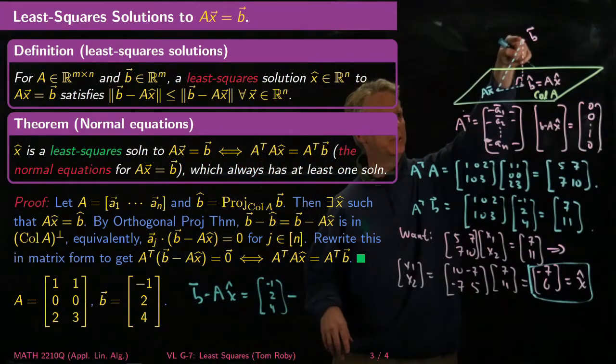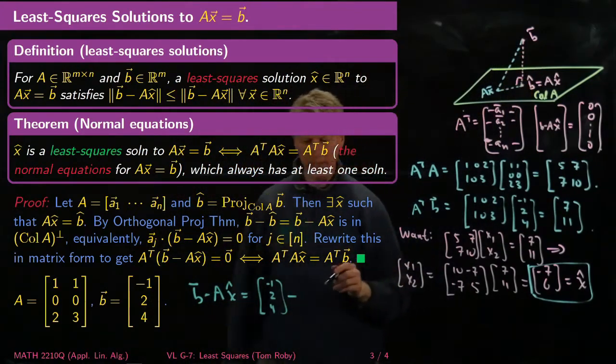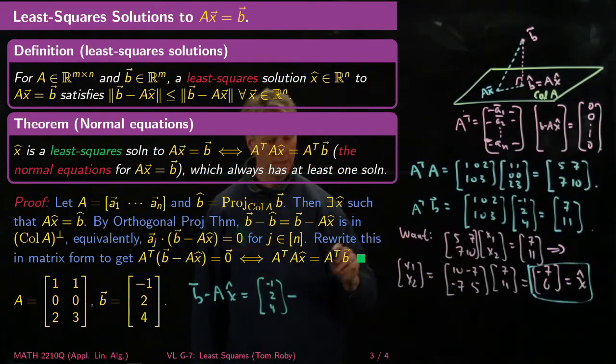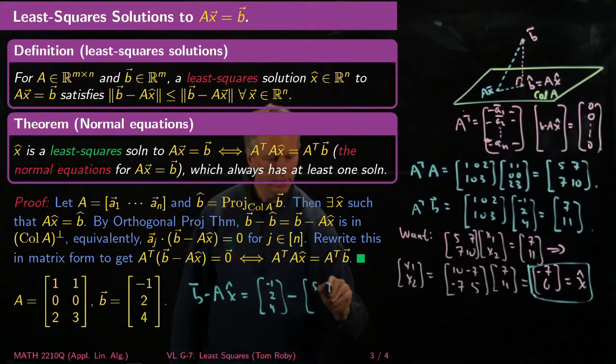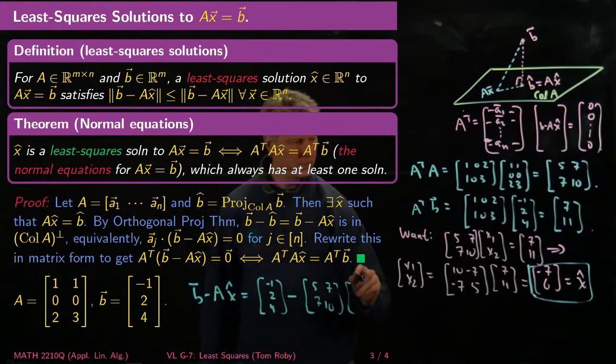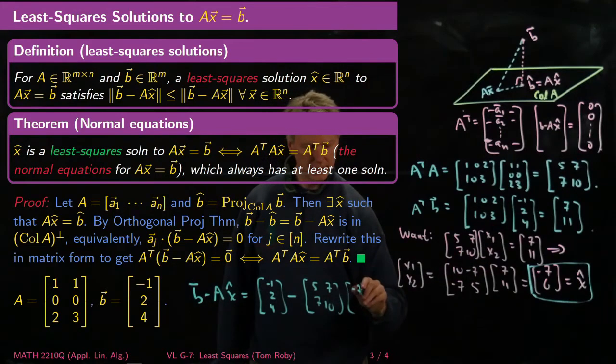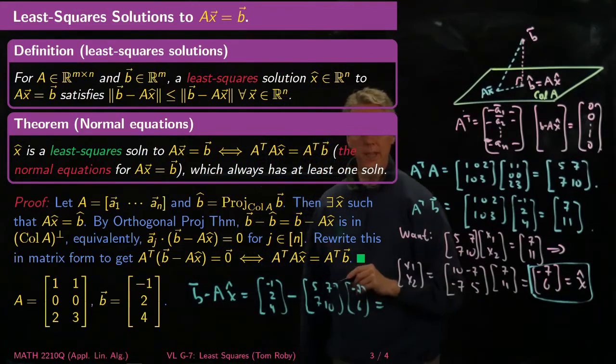What did I do wrong? This is A transpose A. What I'm interested in is what happens when I put A there. So I want to put my original A here, which was [[1,1],[0,0],[2,3]].